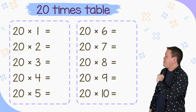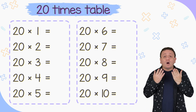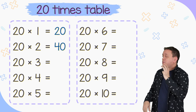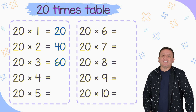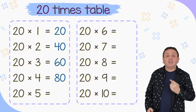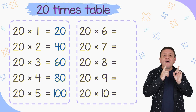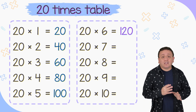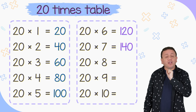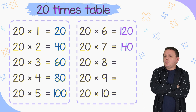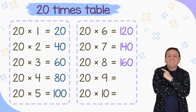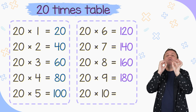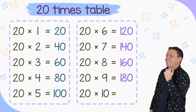And let's start with our last multiplication table: the 20 times table. 20 times 1 equals 20. 20 times 2 equals 40. 20 times 3 equals 60. 20 times 4 equals 80. 20 times 5 equals 100. What about 20 times 6? 20 times 6 equals 120. 20 times 7 equals 140. What about 20 times 8? 20 times 8 equals 160. 20 times 9 equals 180. And the last one of our video: 20 times 10 equals 200.